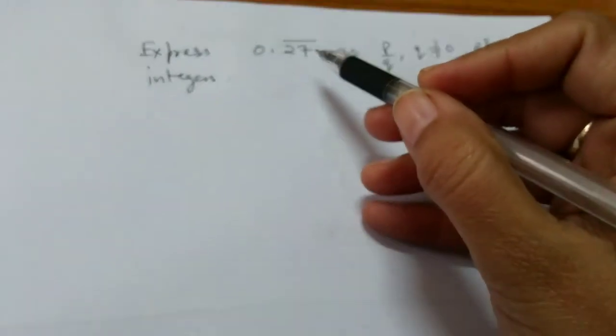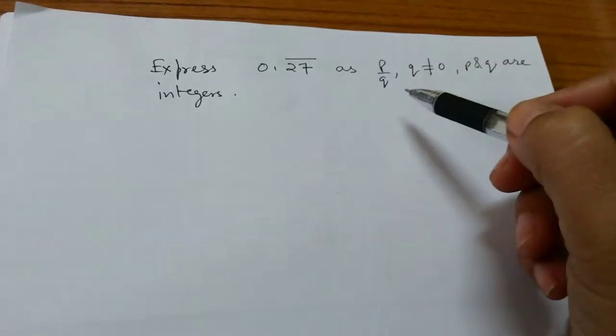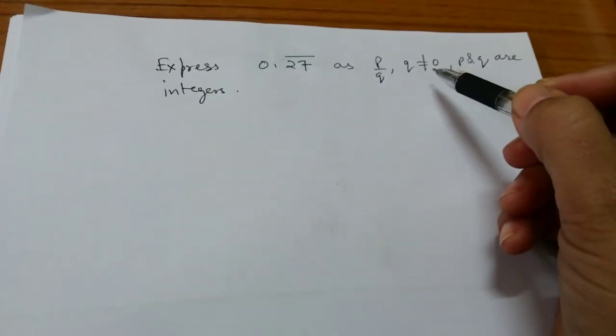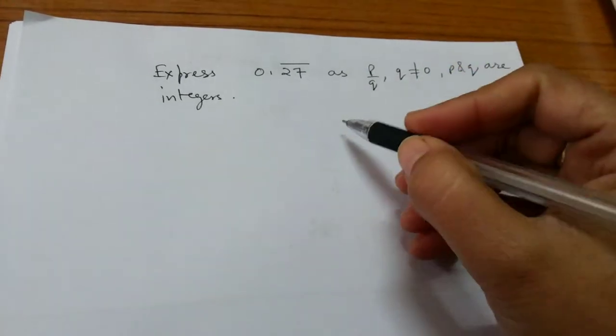Let us see how to express 0.27 bar as a rational number, that is in the form P by Q, where Q is not equal to 0, and P and Q are integers.